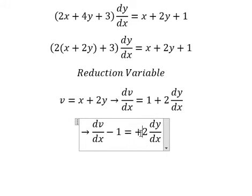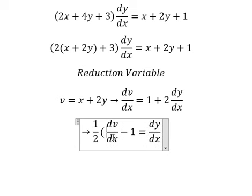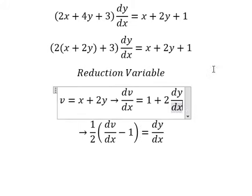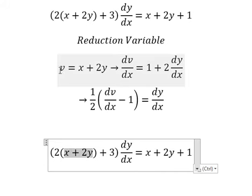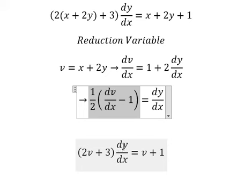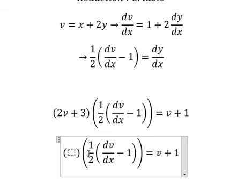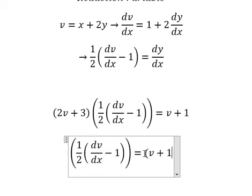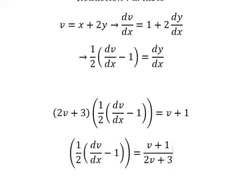I need to isolate dy over dx, so I move number one to the left side and then divide both sides by number two. Next, we substitute this expression — we replace this term with v, and this one with the corresponding expression. Then we divide both sides by this term.